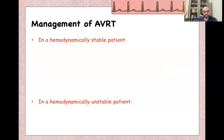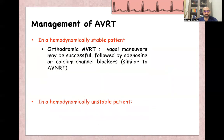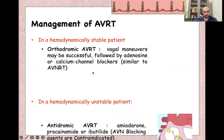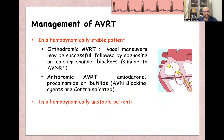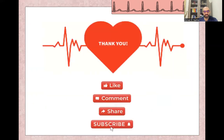Management of AV re-entry tachycardia must differentiate between hemodynamically stable and unstable patients. For stable patients, orthodromic AV re-entry tachycardia is treated like AV nodal re-entry tachycardia: first vagal maneuvers, then adenosine or calcium channel blockers if unsuccessful. For antidromic AV re-entry tachycardia, AV nodal blocking agents like adenosine or calcium channel blockers are contraindicated; treatment is with amiodarone or procainamide, similar to ventricular tachycardia. For hemodynamically unstable patients, urgent synchronized cardioversion is required. Thank you, and see you in the next video on AV nodal re-entry tachycardia.